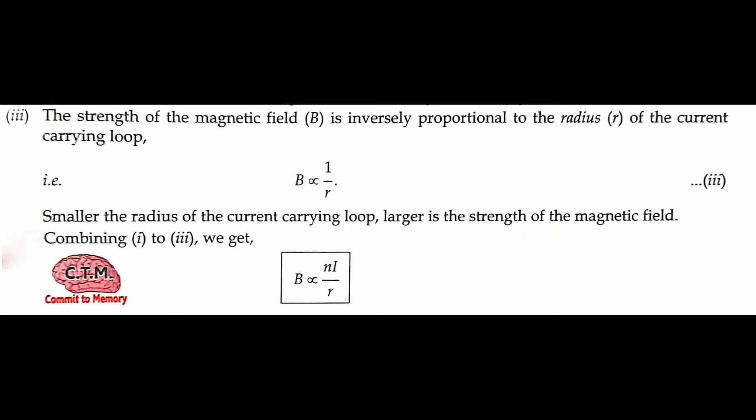The SI unit of magnetic field is Tesla, denoted by capital T. Since magnetic field has both magnitude and direction, it is a vector quantity.